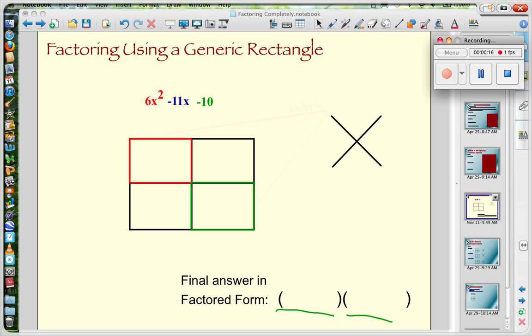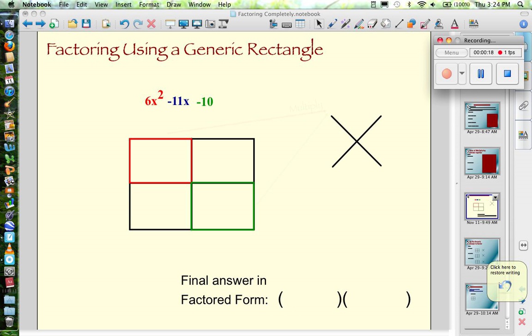In chapter 6 we did the opposite. In chapter 6 we started out with the binomial factors and we multiplied using a generic rectangle. And when we multiplied we ended up filling in the rectangle. So that's what we need to do first. We need to fill in our rectangle.